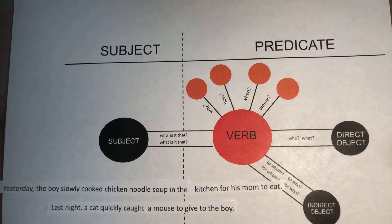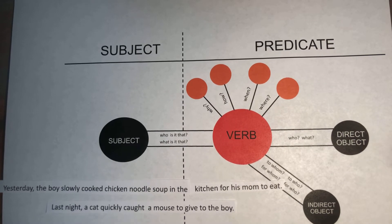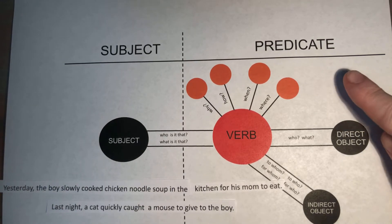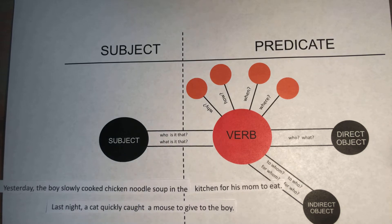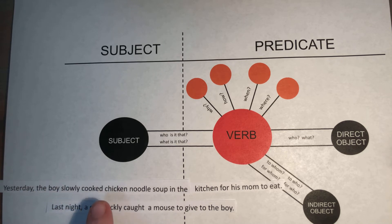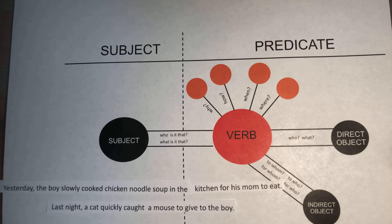Hello my friends! Today on Sentence Analysis Advanced we are going to learn about subject and predicate number three. Remember our subject is what our sentence is about and our predicate tells us more about our subject. So we have two sentences today: 'Yesterday the boy slowly cooked chicken noodle soup in the kitchen for his mom to eat' and 'last night a cat quickly caught a mouse to give to the boy.'